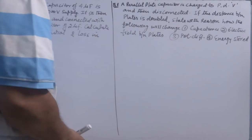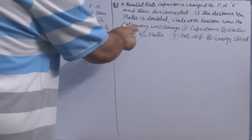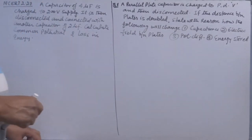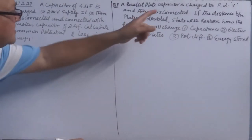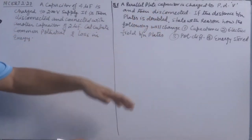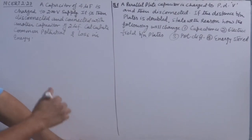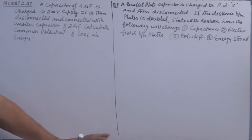Let us discuss two more questions based on capacitors. Question number one is a conceptual question which says: a parallel plate capacitor is charged to a potential difference V and then disconnected. If the distance between the plates is doubled, state the reason how the following will change: capacitance, electric field between plates, potential difference, and energy stored.